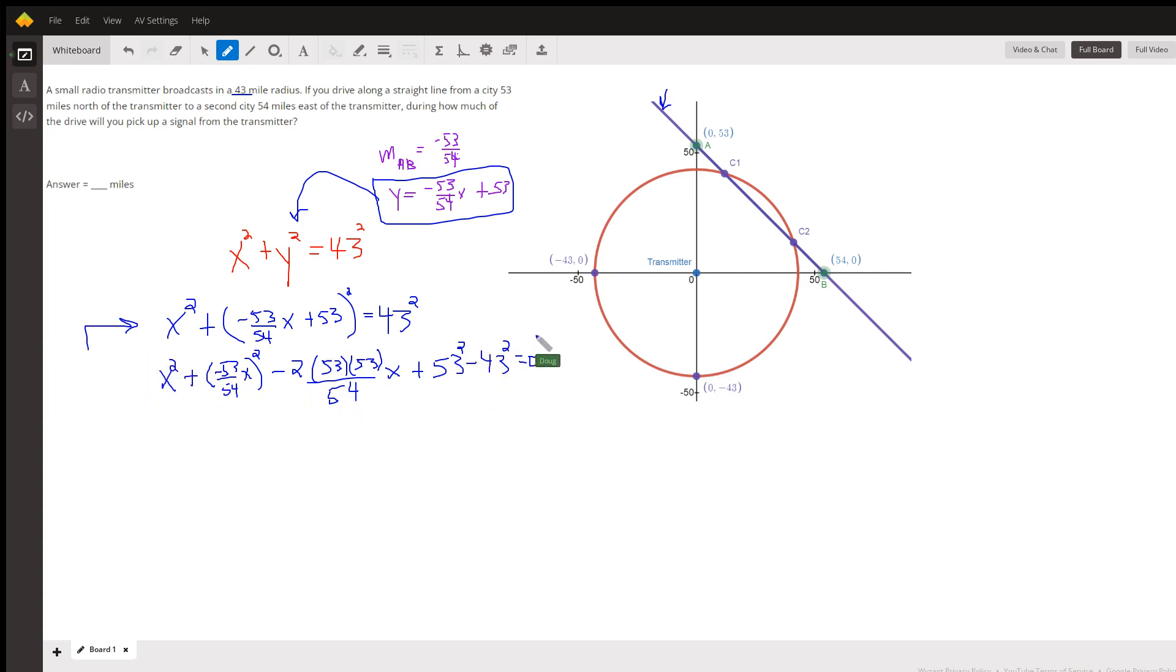...we've got a quadratic equation where A is 1 plus 53 over 54, the quantity squared, the coefficient of x squared. And B would be negative 53 over 27. And C would equal 53 squared minus 43 squared.